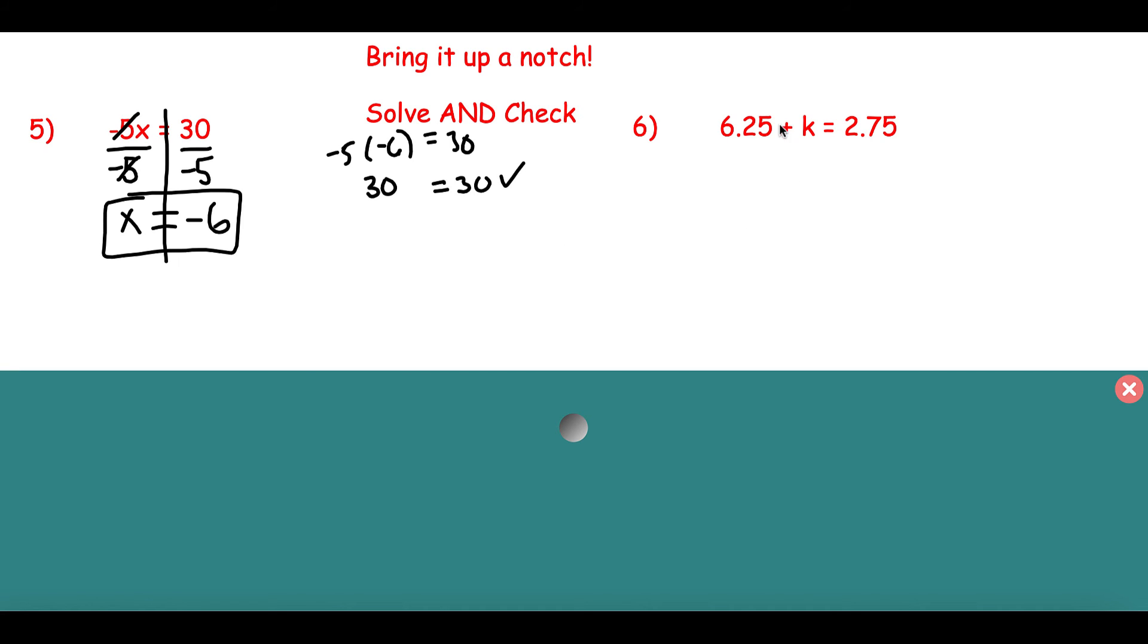Let's come on over here. I want to isolate or get my K by itself. I'm going to draw this line down the middle. What is the opposite operation of adding? This is adding 6.25. I want to get it to the other side, so I have to subtract 6.25. I'm going to subtract 6.25 from both sides.